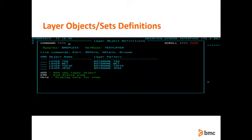As in previous releases, you are free to add a layer object to the definition base being edited from a view such as TST or TOBJ. Press End when you are finished to return to the layer object definition dialog. From here, you can issue the next command to move on to the next step in the wizard.